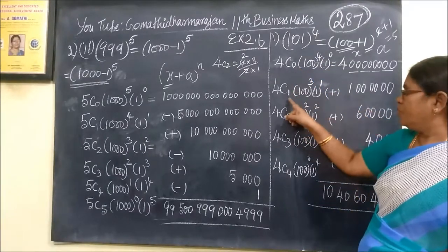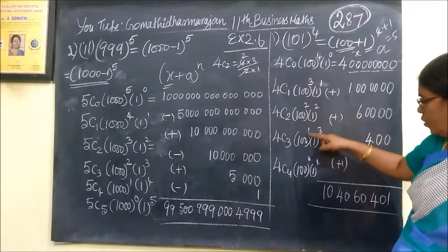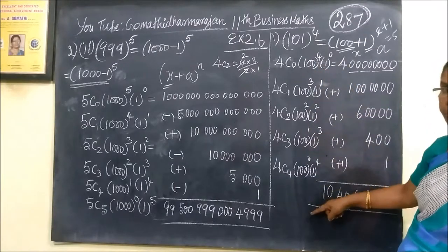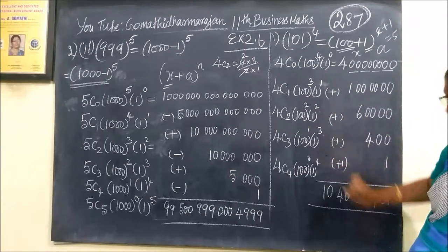Now, 4C0, 4C1, 4C2, 4C3, 4C4. Then power 4, 3, 2, 1 - this is decreasing. This is increasing: 0, 1, 2, 3, 4. Write it. This is mere calculation only.